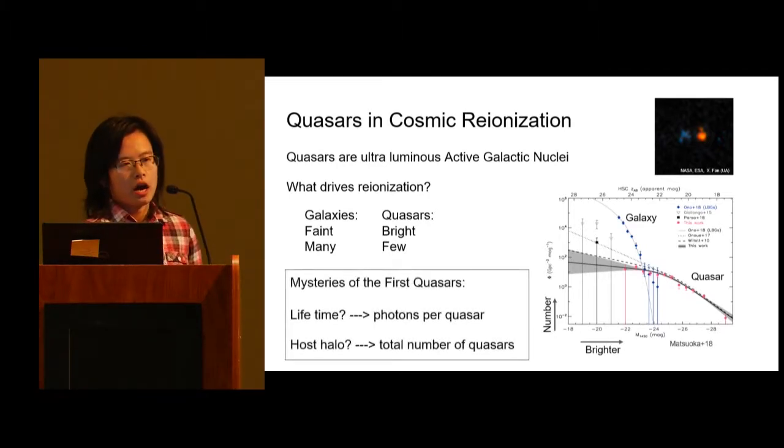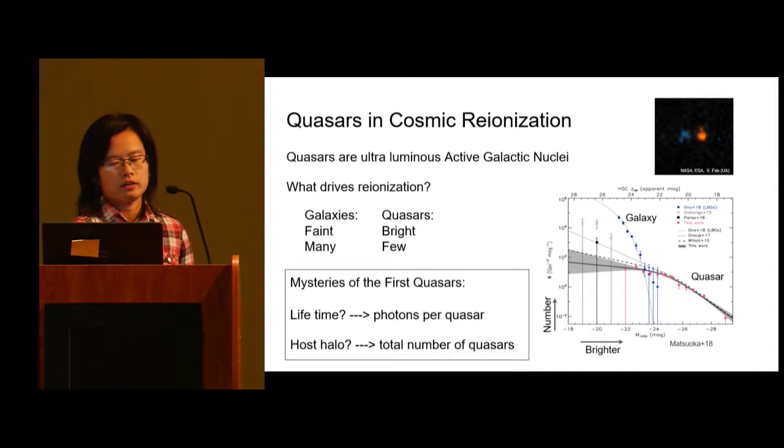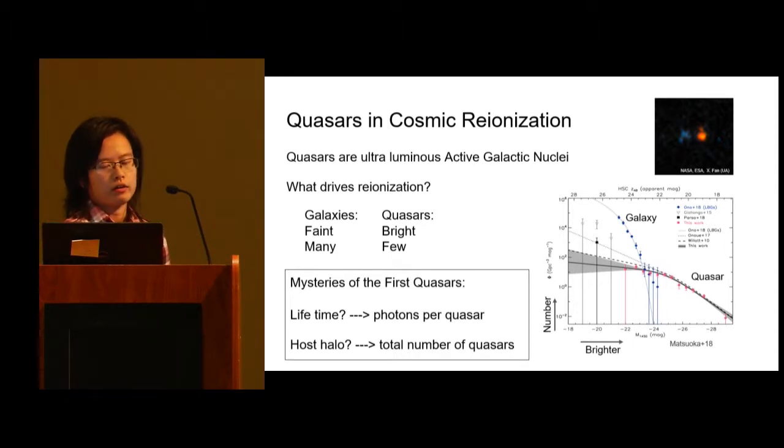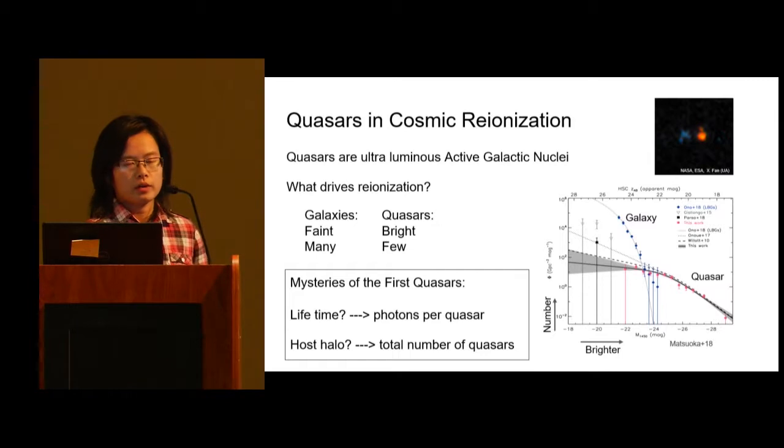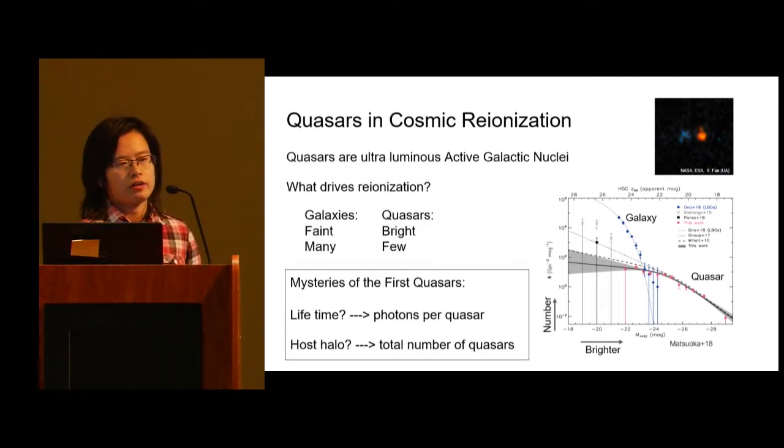For example, what's their lifetime, or how long can they shine? This determines the number of photons per quasar can offer. Also, what's their host halo? Most theorists believe that quasars live in the most massive halos in reionization. Because the most massive halos are very rare, if they all reside in those massive halos, the total number of quasars will be significantly lower than if they reside in intermediate mass halos.